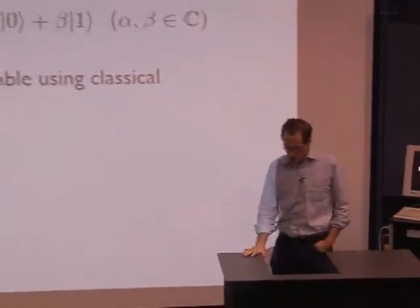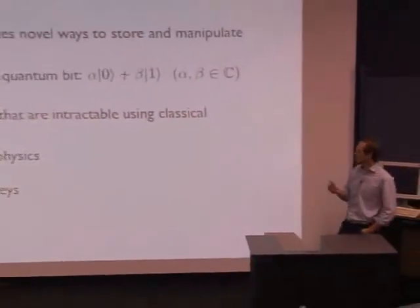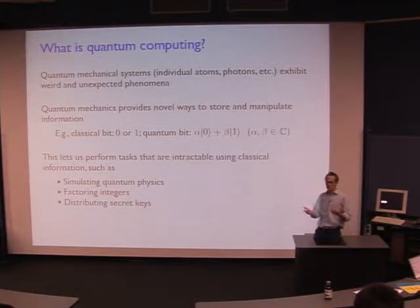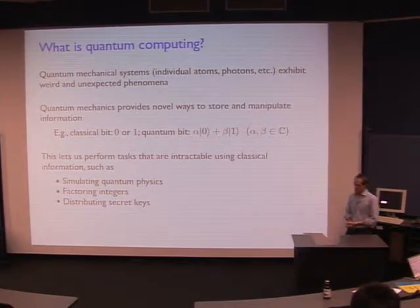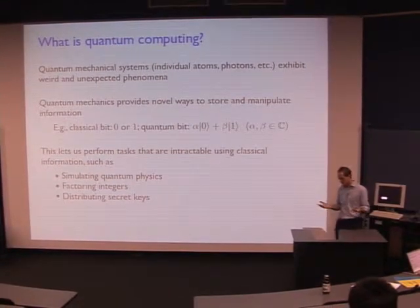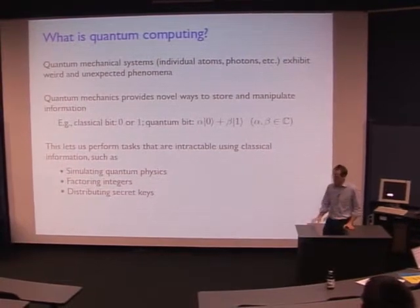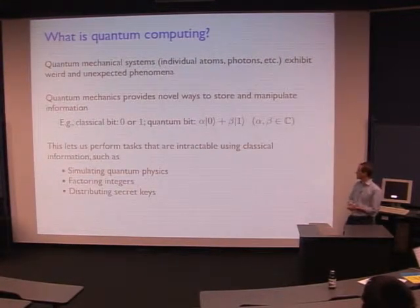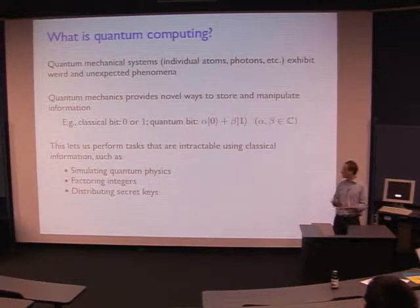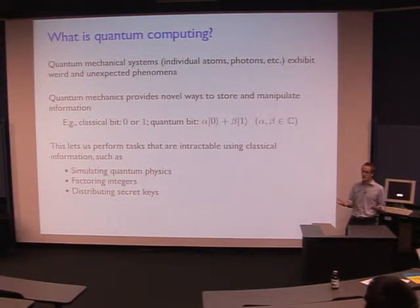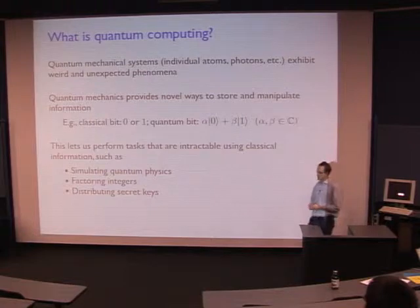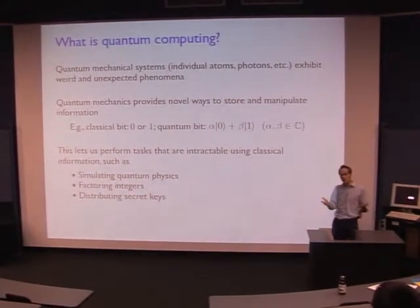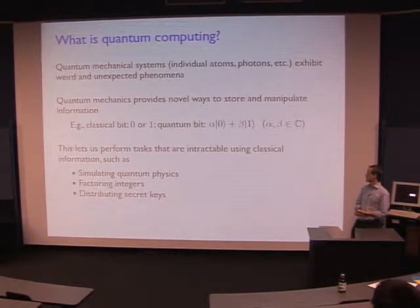This course is an introduction to quantum computing. You probably know that quantum mechanics is a theory of physics which describes the behavior of systems like atomic systems. What was realized fairly recently, starting in the 1980s, was that if you think about a theory of information processing built on the principles of quantum mechanics, then there are certain kinds of tasks that you can solve either a lot faster, or some tasks that you couldn't solve at all if you were only using classical information.